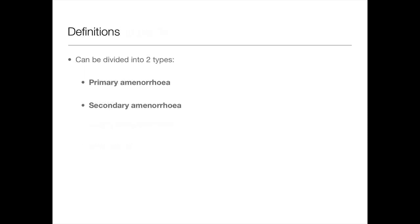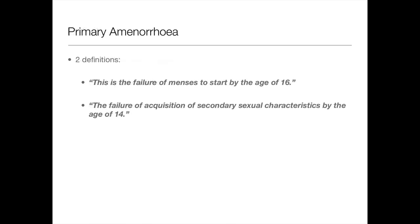So, what is amenorrhea? Amenorrhea can be divided into two types: primary amenorrhea and secondary amenorrhea. Primary amenorrhea has two different definitions. First of all, it's the failure of menses to start by the age of 16. And secondly, it can be the failure of acquisition of secondary sexual characteristics by the age of 14 — so that's adrenarche, telarche and menarche, which we talked about in the menstrual cycle podcast.